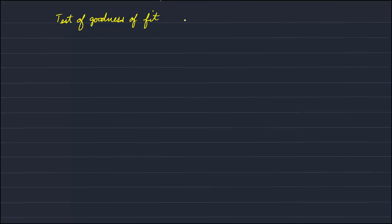The Kolmogorov-Smirnov test is a test for goodness of fit to the shape of a PDF, or probability density function. It has the same role as the parametric chi-squared goodness of fit test, but this is a non-parametric test.